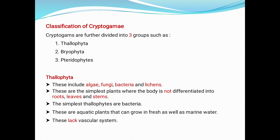First one is Thallophyta. These include algae, fungi, bacteria and lichens. These are the simplest plants, where the body is not differentiated into roots, leaves and stems — unlike typical plants. The simplest thallophyte is bacteria. These are aquatic plants that can grow in fresh as well as in marine water. They lack a vascular system, that is the xylem.